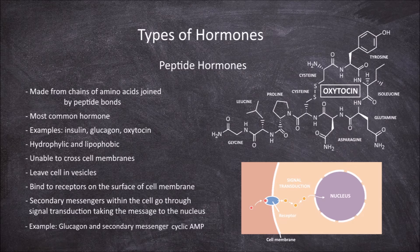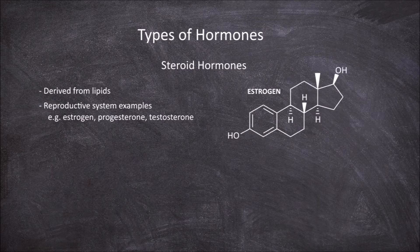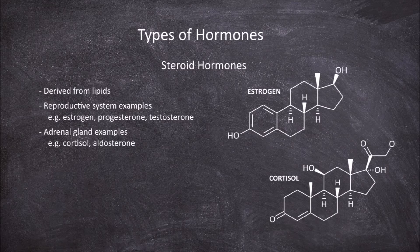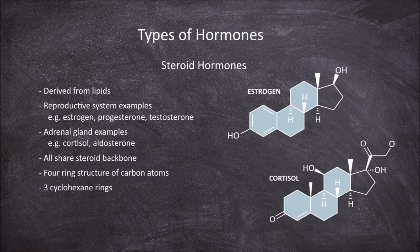The second group of hormones are the steroid hormones, also known as lipid derived hormones as they come from lipids. Examples of steroid hormones include those related to the reproductive system, such as estrogen, progesterone, and testosterone, as well as those related to the adrenal glands, such as cortisol and aldosterone. Steroid hormones all share the same characteristic steroid backbone, consisting of a four ring structure of carbon atoms that has three six-carbon rings (cyclohexane rings) and one five-carbon ring (cyclopentane ring).